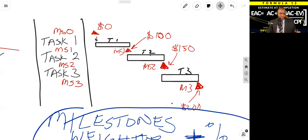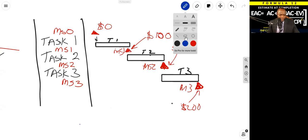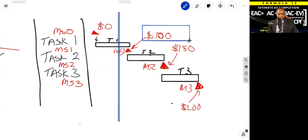So let's assume we are at time now. Let's say time now is here. If this is time now. You can see time now. You can see this milestone is weighed at $100, but the percent complete of the work right here,